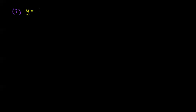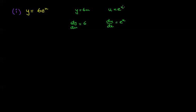Let's look at one simple example. Let's say y equals 6 times e to the power of x. We can use the chain rule to differentiate this. Let u equal e to the power of x, then y equals 6u. So dy by du equals 6, and du by dx equals e to the x, because the derivative of e to the x is just e to the x. Multiplying these two together gives us dy by dx.